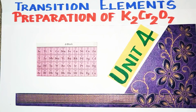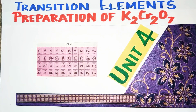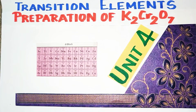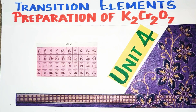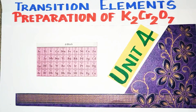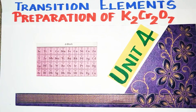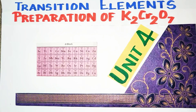If you want to see the Potassium Dichromate color, it has a beautiful reddish orange color. In organic chemistry, it is used as one of the best oxidizing agents in oxidation reactions. So let's look at how to prepare this Potassium Dichromate.